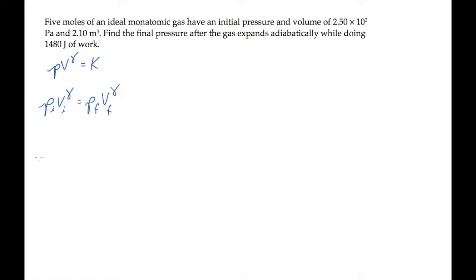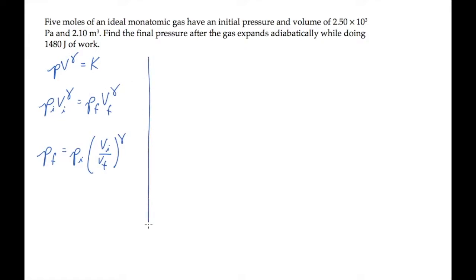First, let's solve the second equation for the final pressure — what we're asked to find — seeing that it equals the initial pressure times the ratio of volumes raised to the power of gamma. On the right hand side, we know all of the quantities except for the final volume, so we need to find that, which we can do using the work done during the adiabatic expansion.